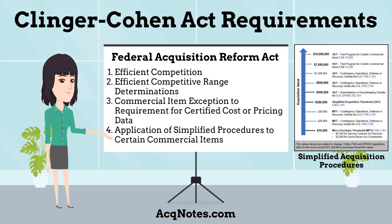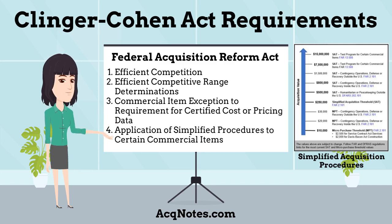And finally four, application of simplified procedures to certain commercial items. This authorizes the establishment in the Federal Acquisition Regulations of simplified acquisition procedures for items within a certain dollar range when the contracting officer reasonably expects that offers will include only commercial items.